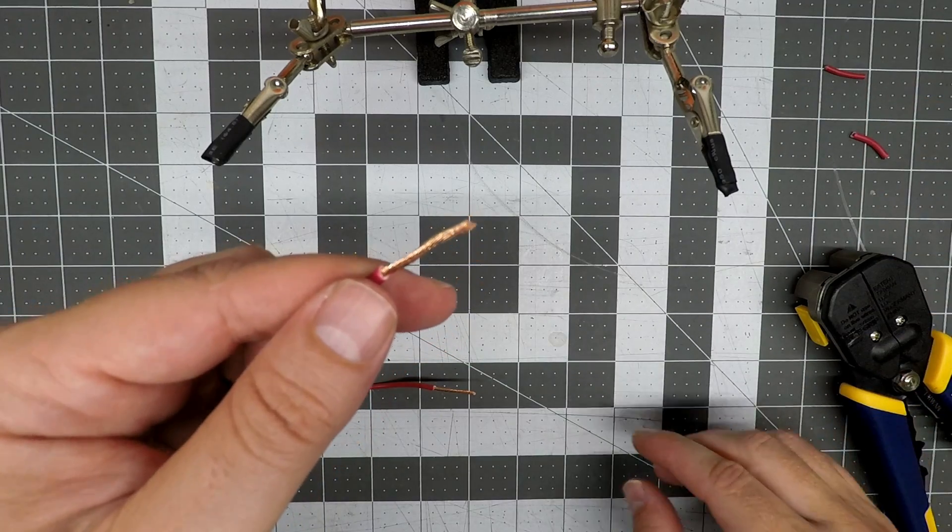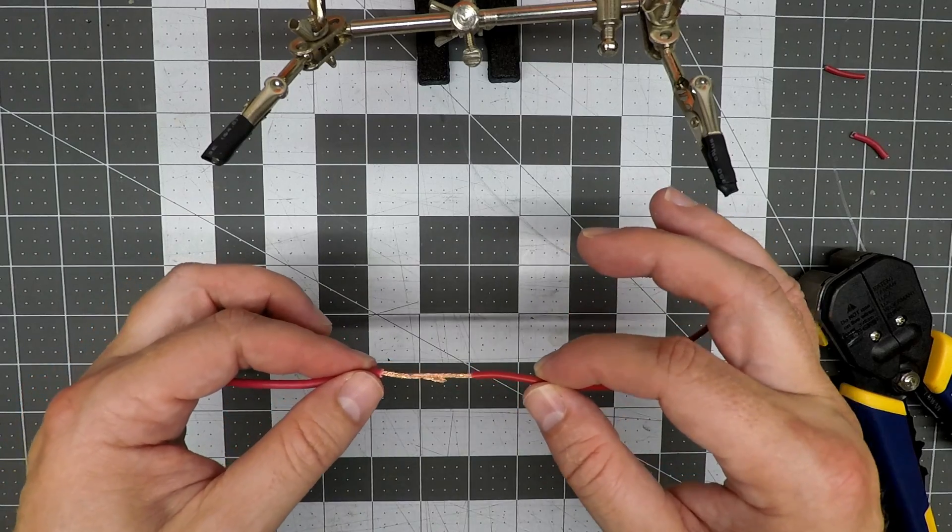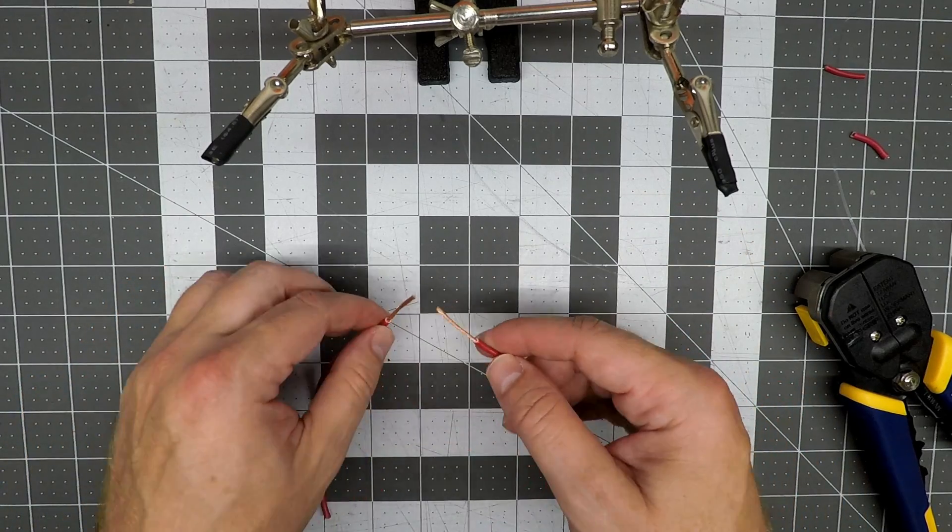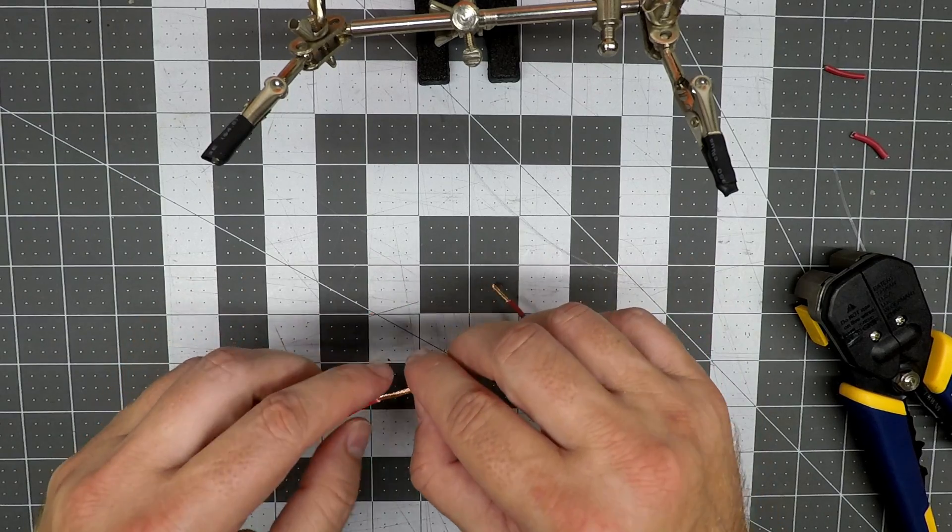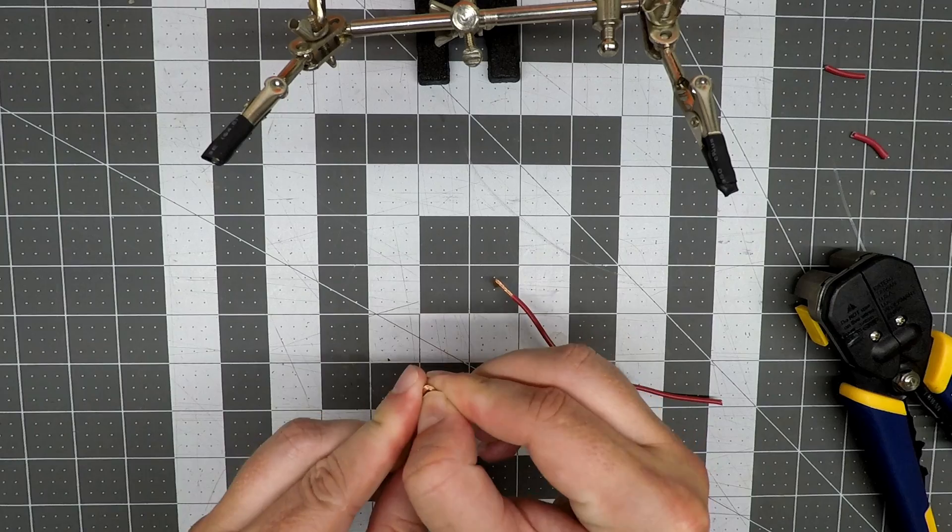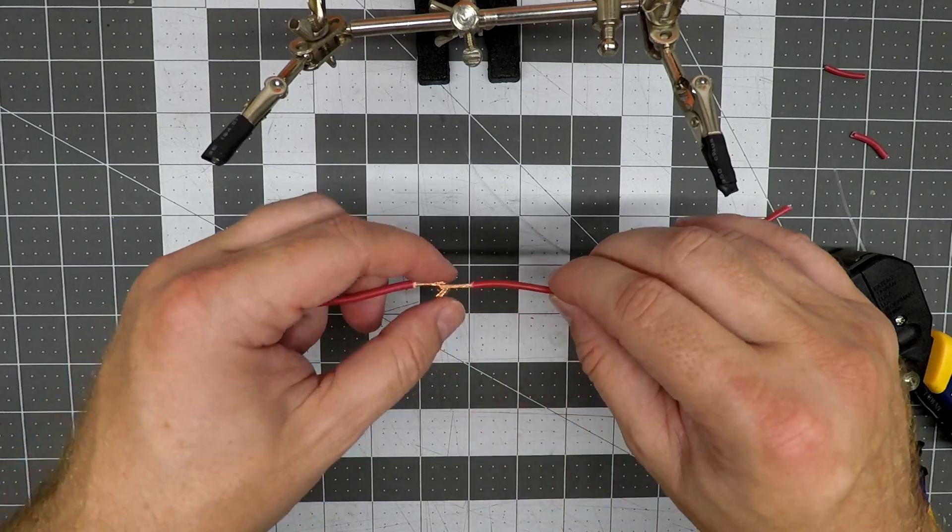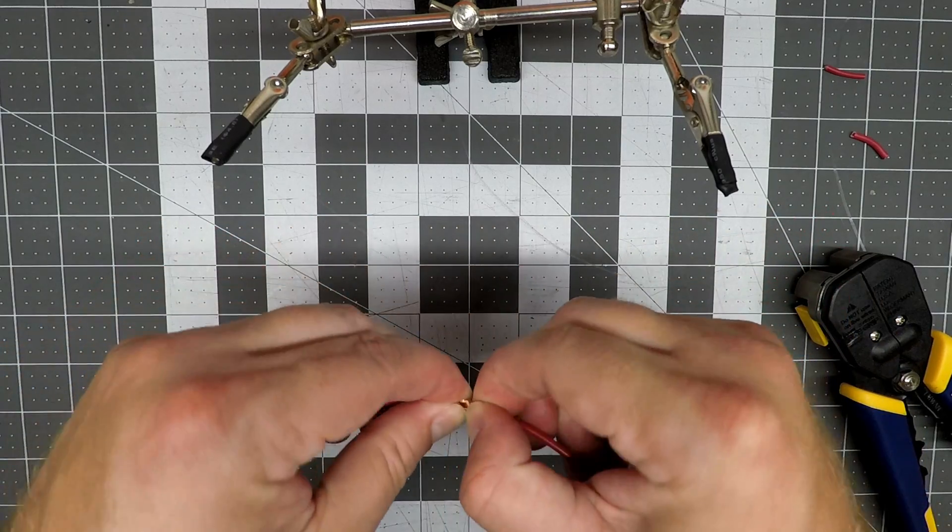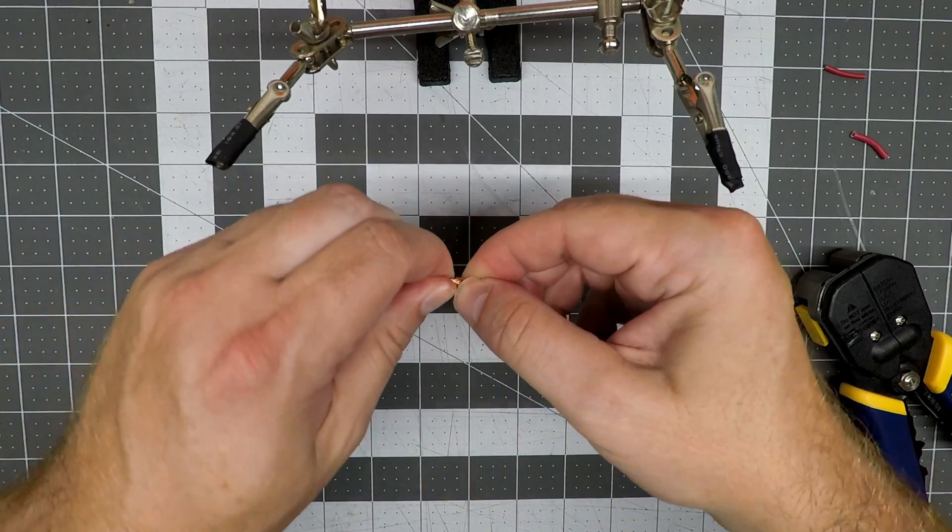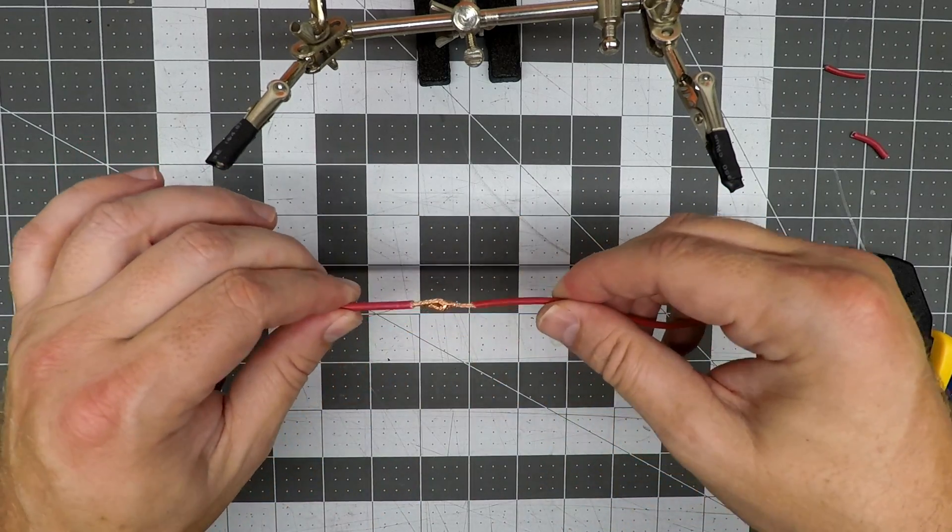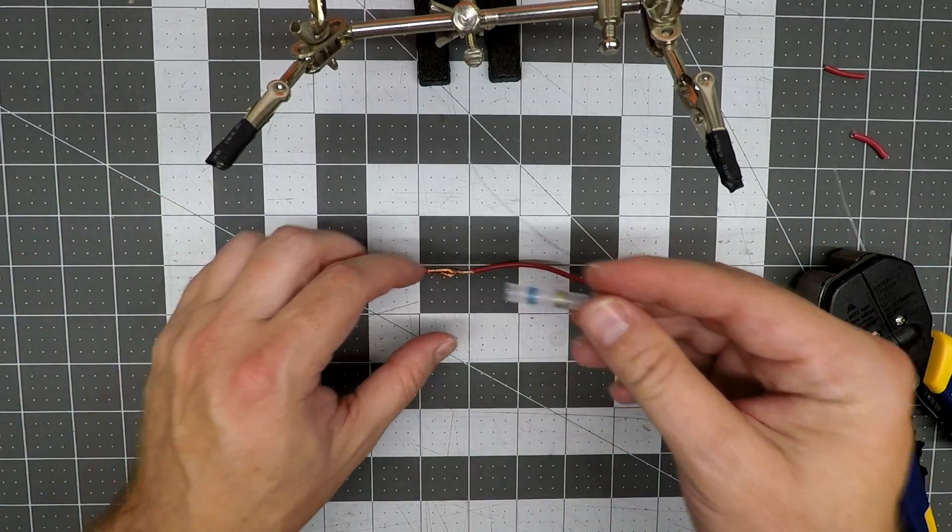There's a number of ways you can splice them together. Sometimes people say to fray them and then mix them together, but I think for strength you want to make kind of like a C shape out of them, or a J depending on how you want to look at it. Hook them together and then twist like that. And then we put the solder seal over it.